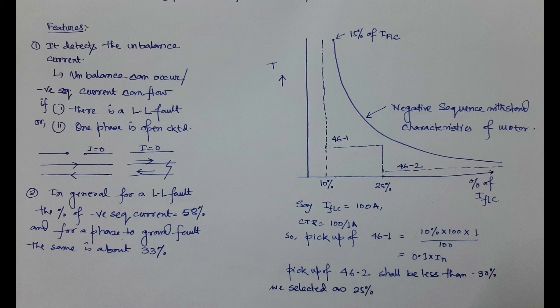For 46-2 we select a setting below 30% because, as explained, the negative sequence component for a single-phase-to-ground fault is 33%. By keeping the pickup below 33% — we select 25% — earth faults producing negative sequence current can also be detected and isolated, providing an additional level of protection. For a line-to-line fault the component is 58%, which will also be detected. So the pickup setting of 46-2 is 0.25 × In.